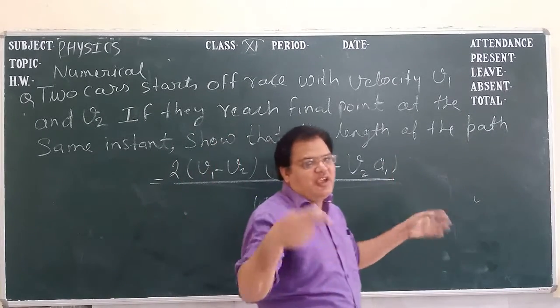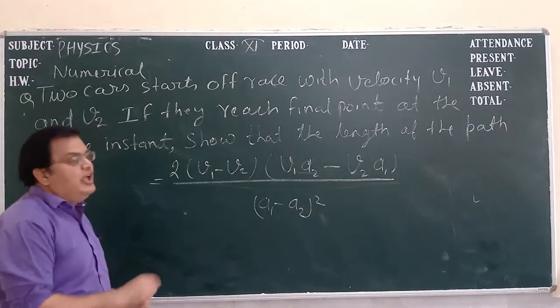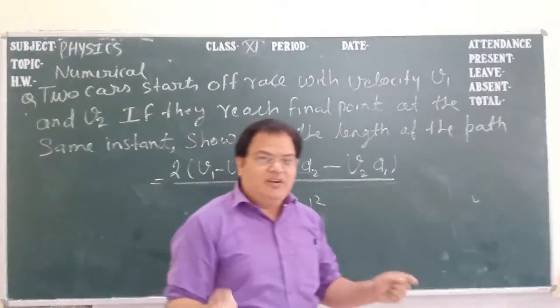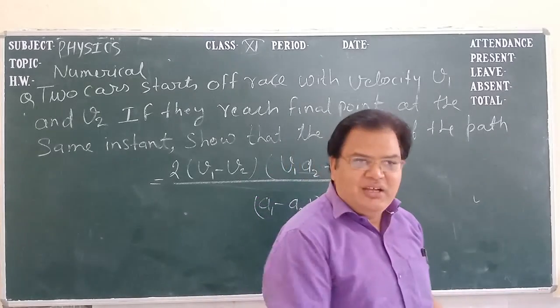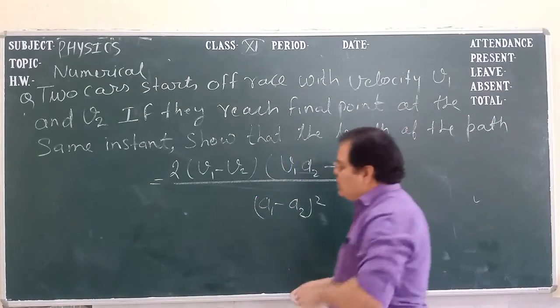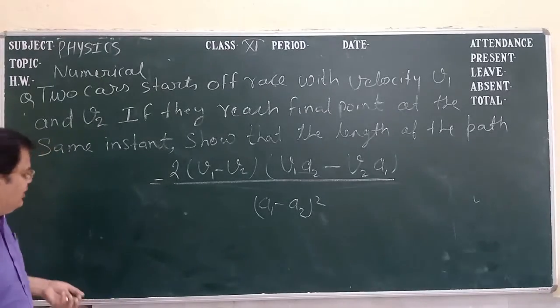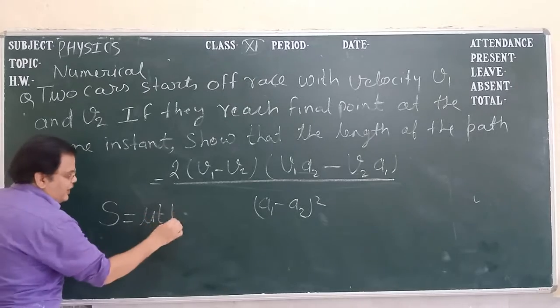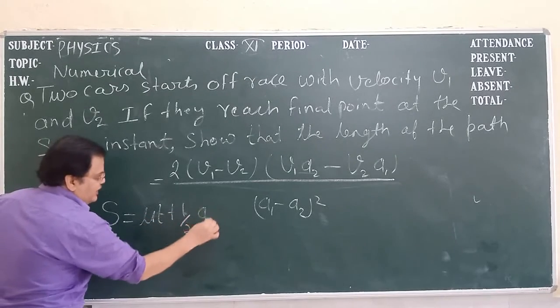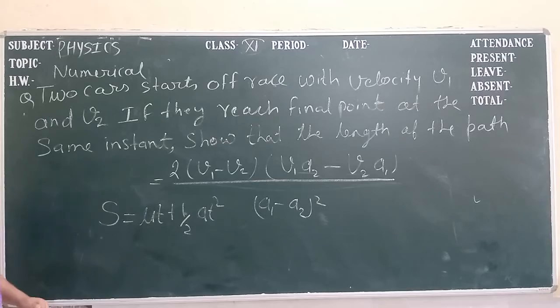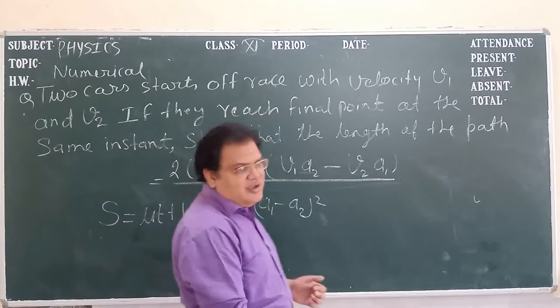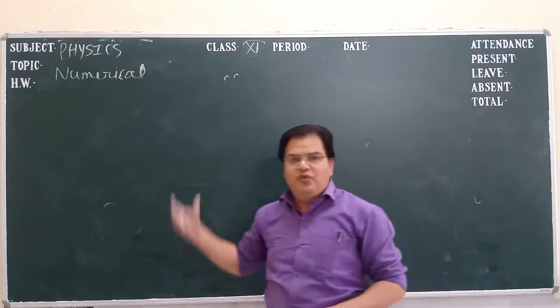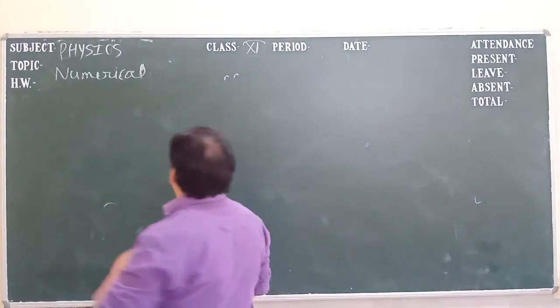So we have to find the distance that both the cars cover. For that we have to use the formula s equal to ut plus half at square. By this we can find the distance. Now we are going to solve this numerical.